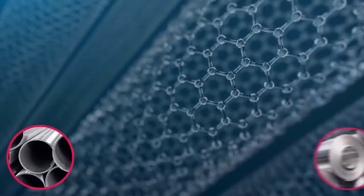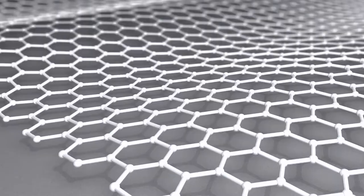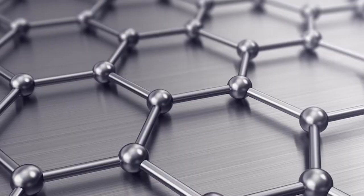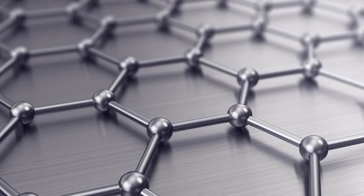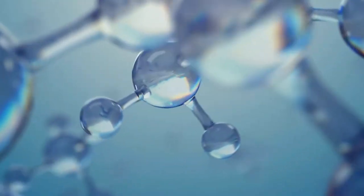Stronger than steel yet lighter than aluminum, harder than diamond but more elastic than rubber, the strongest known substance is graphene. Other astonishing properties of graphene exist.